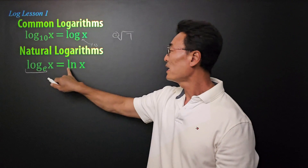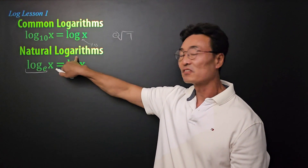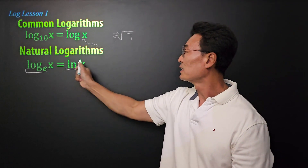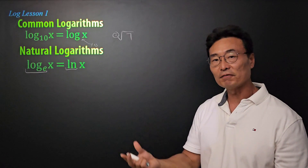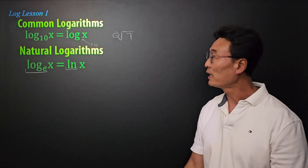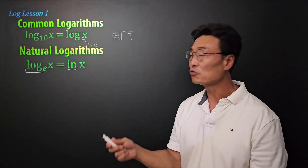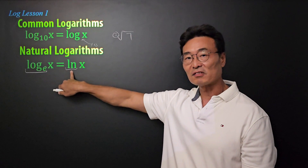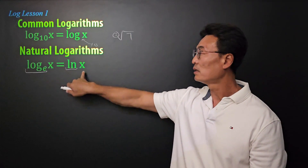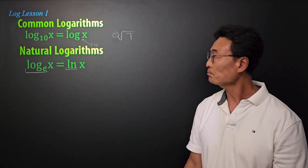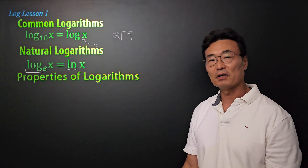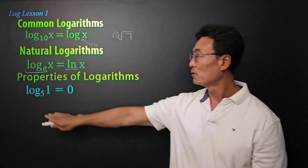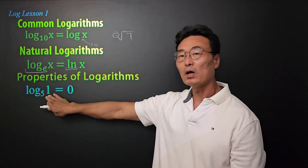Next, the natural log. When we do log base e, we like to write it as ln, which stands for natural log, because we use it a lot in math and in real life as well. When we have base e, we rewrite it as ln of x.